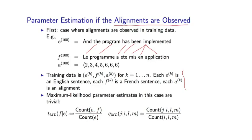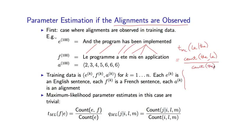For example, if I want to estimate the probability of 'le' given 'there', I set this as the ratio of two terms. The numerator is the number of times these two words have been seen aligned to each other in the training data. The denominator is the number of times I see the English word. So: numerator is the count of E aligned to F, and the denominator is the count of E.